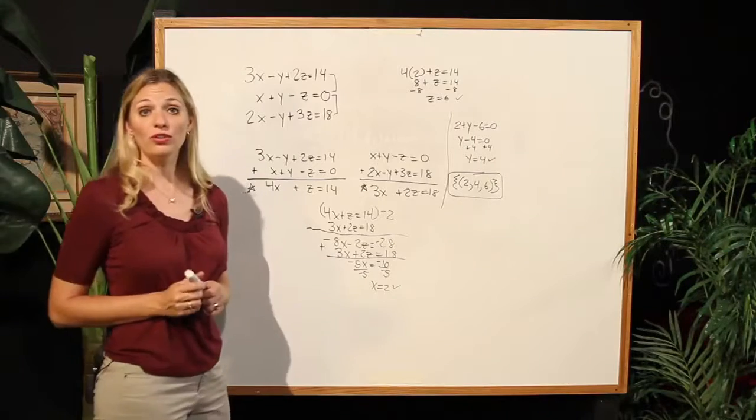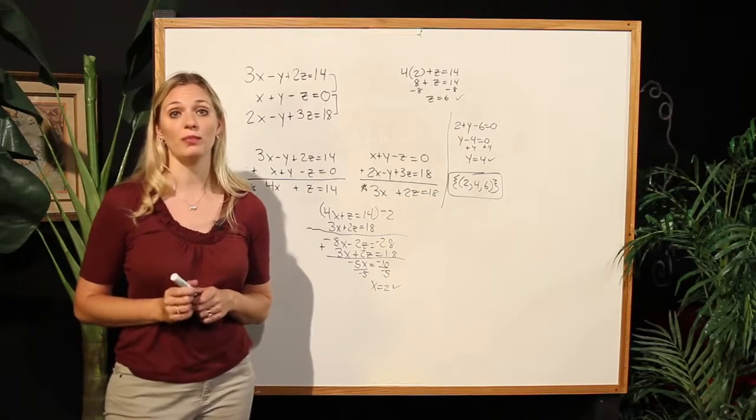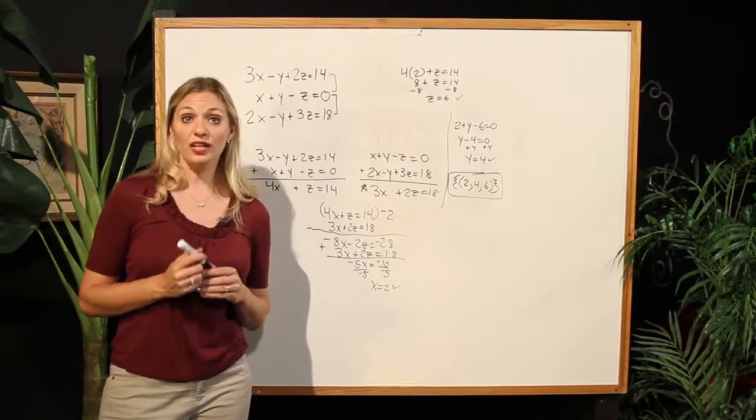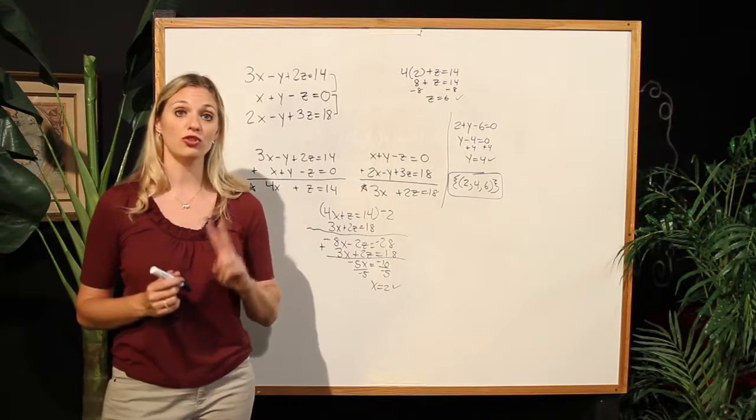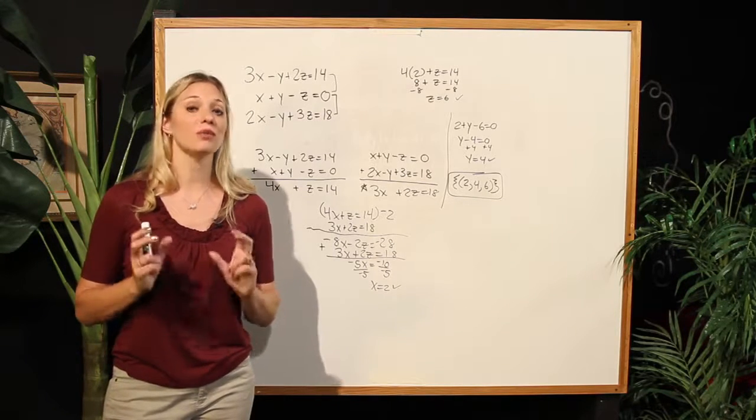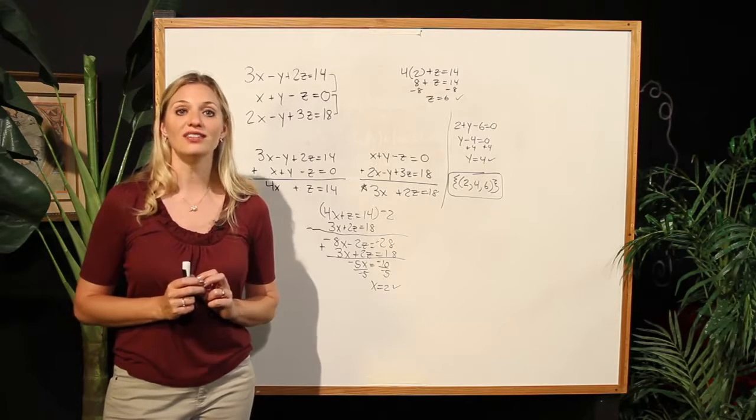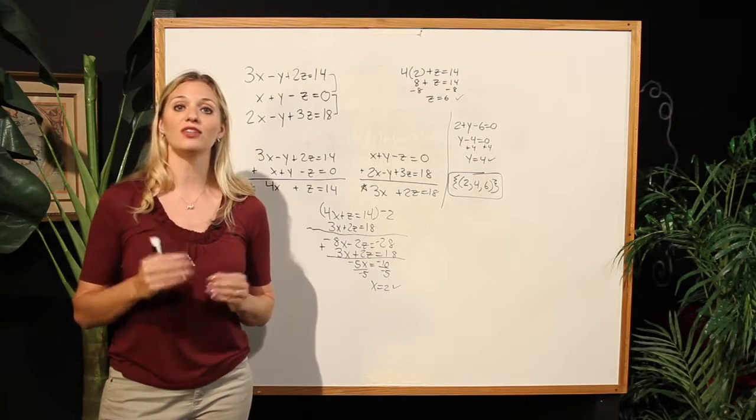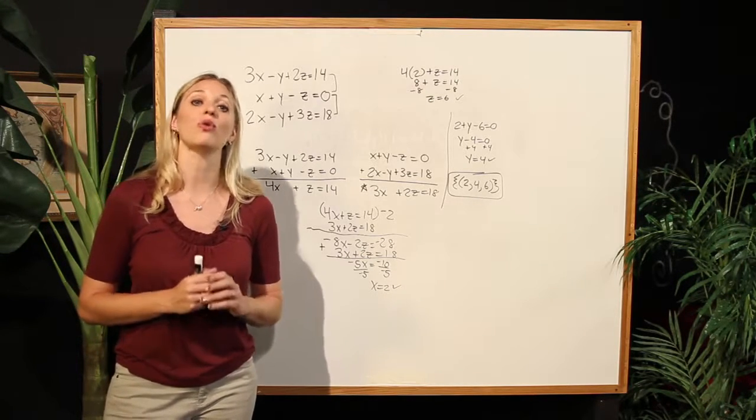In order to solve a system of three equations with three variables, you must conduct the process in two steps. First, eliminate the same variable from two pairings of equations. Then, use your remaining reduced equations to get down to one variable solution. Substitute back in to work your way up to your final ordered triple.